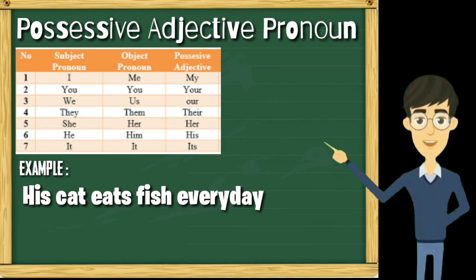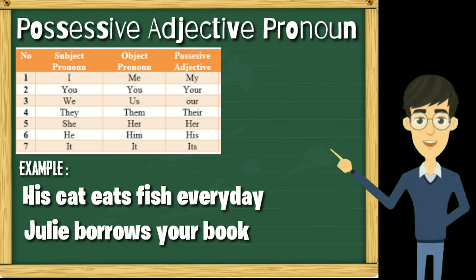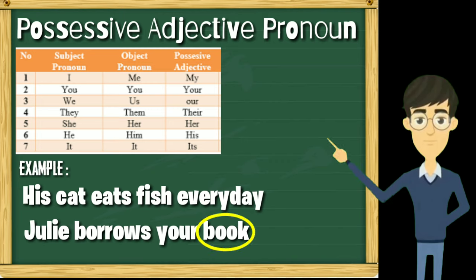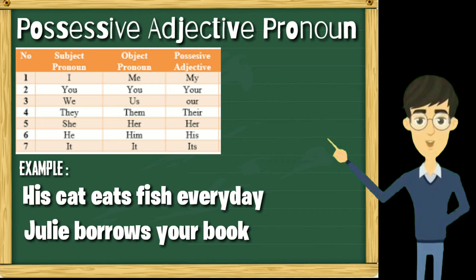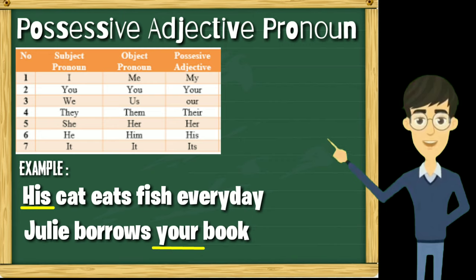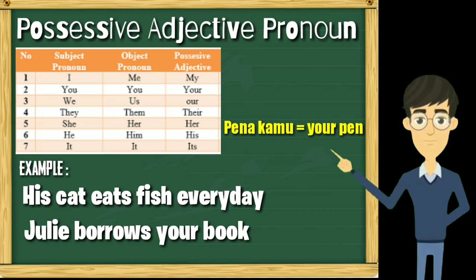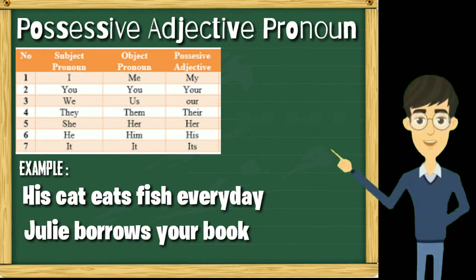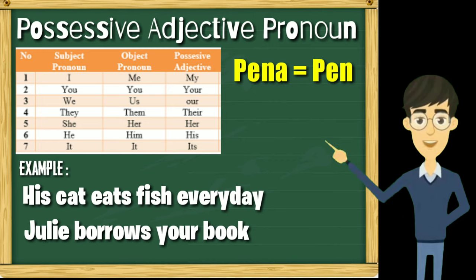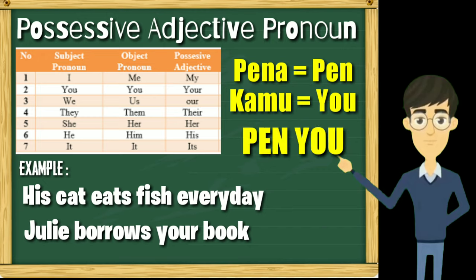Contoh selanjutnya: 'Julie borrows your book.' Buku di sini adalah milik kamu, dan posisi possessive adjective pronoun berada tepat sebelum noun, yaitu buku. Jadi kesimpulannya, possessive adjective pronoun bisa berada di subject atau object, asal digunakan untuk menyatakan kepemilikan. Jadi jika kalian ingin menyatakan 'pena kamu', maka ucapkan 'your pen', karena artinya adalah pena milik kamu.